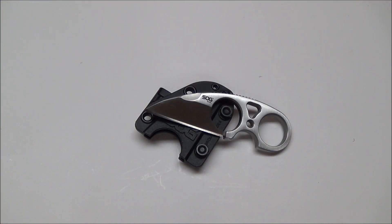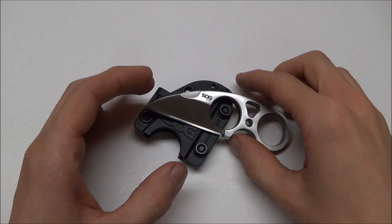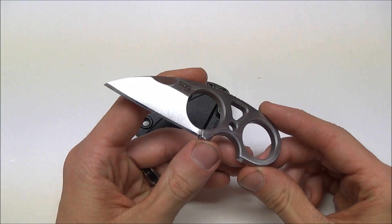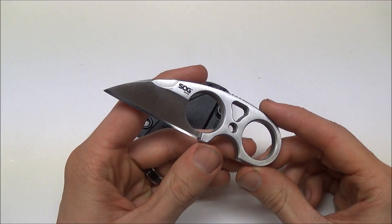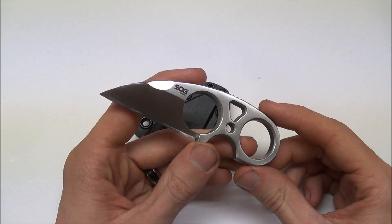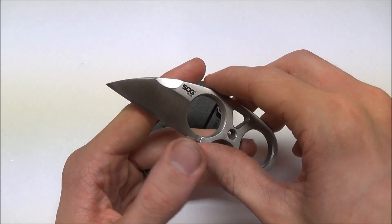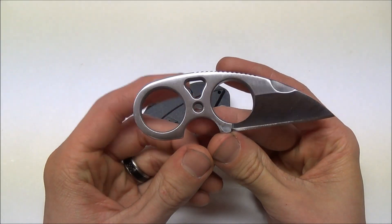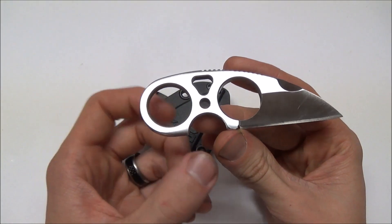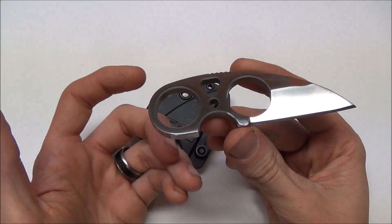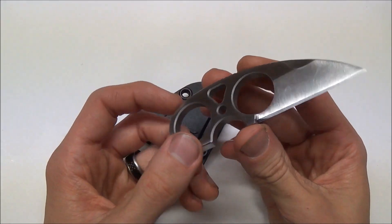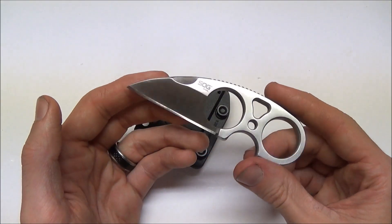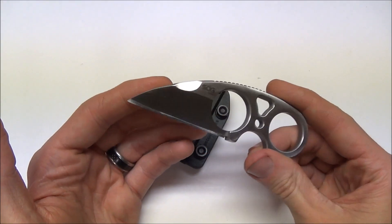Hey guys, what's going on? Sherman here. Today we're going to be taking a look at the SOG Knives Snarl. The Snarl is SOG Knives' production version of custom knife maker Jason Browse's Silent Soldier neck knife.